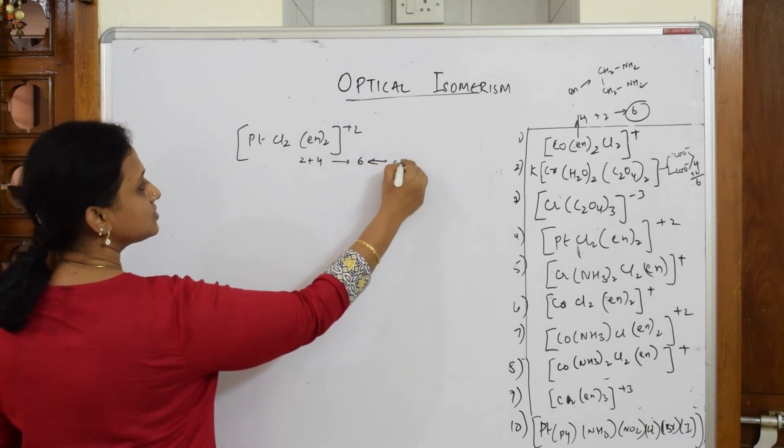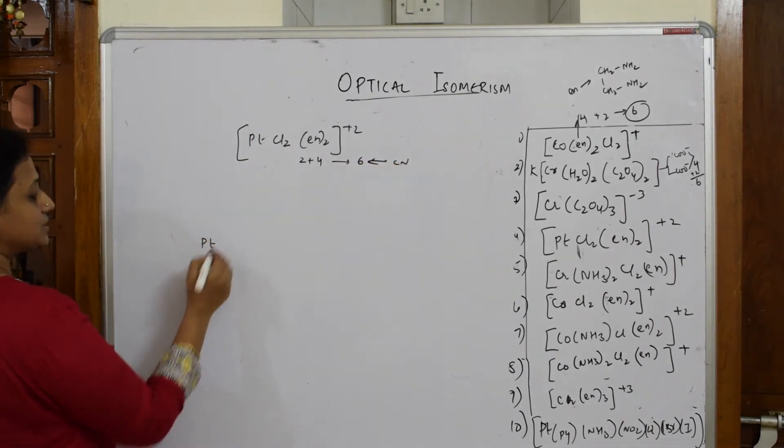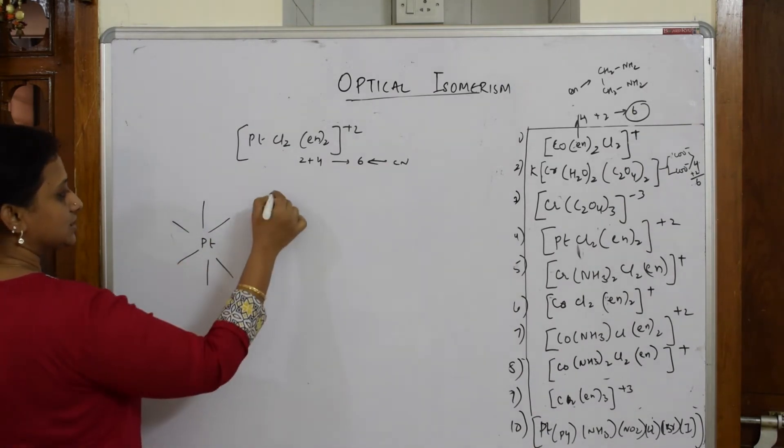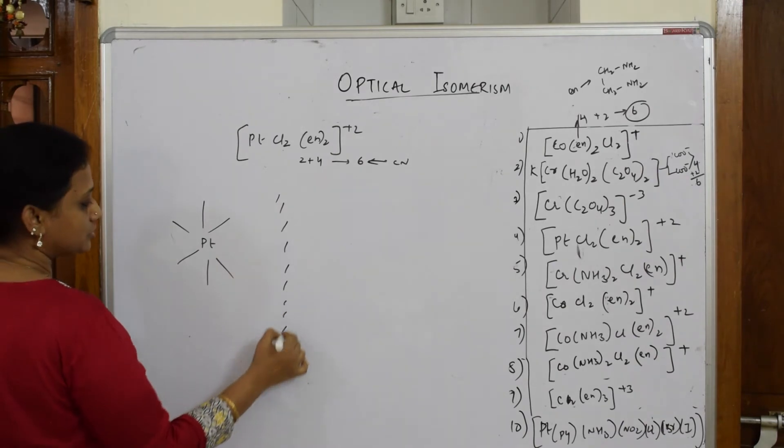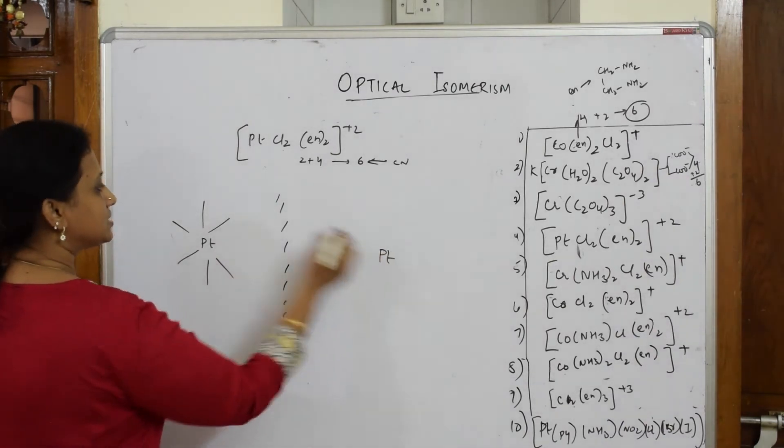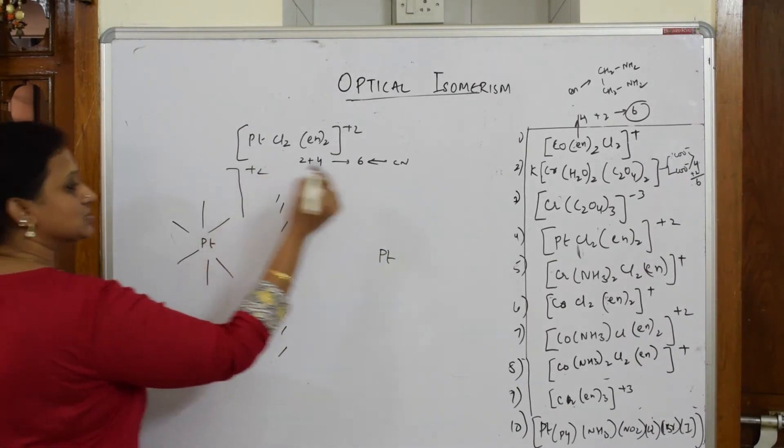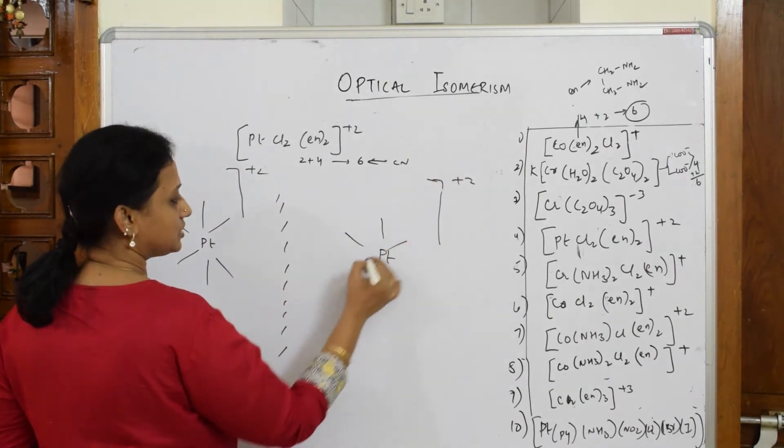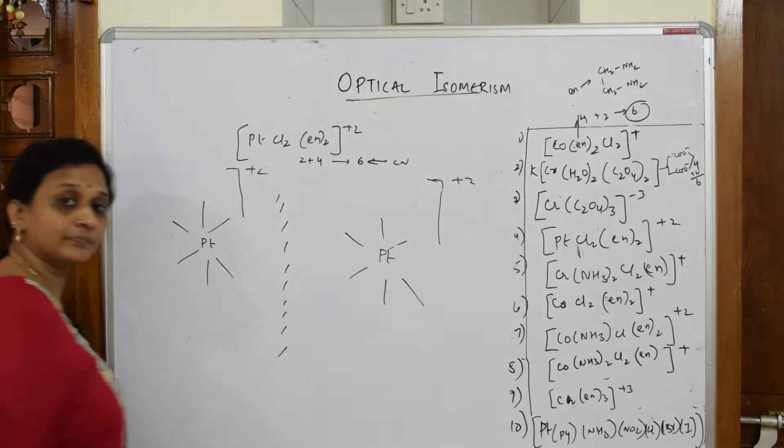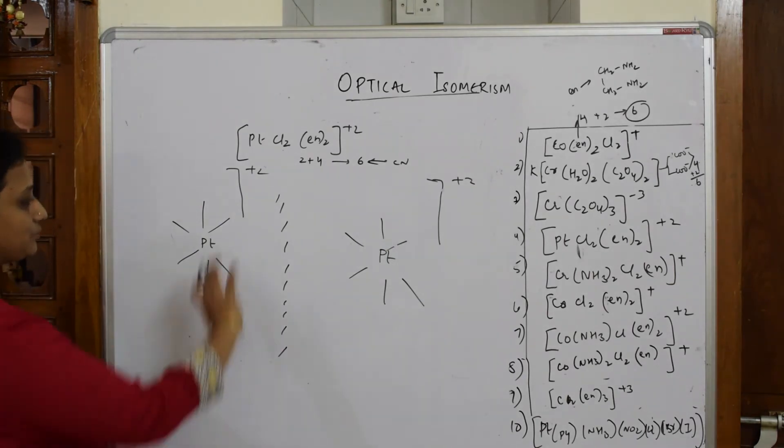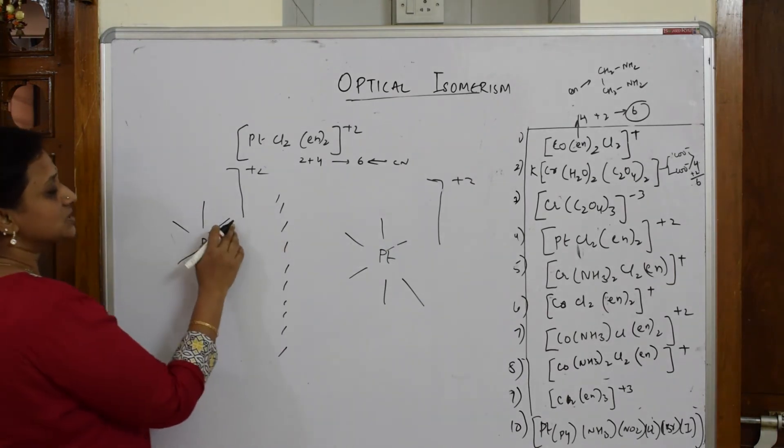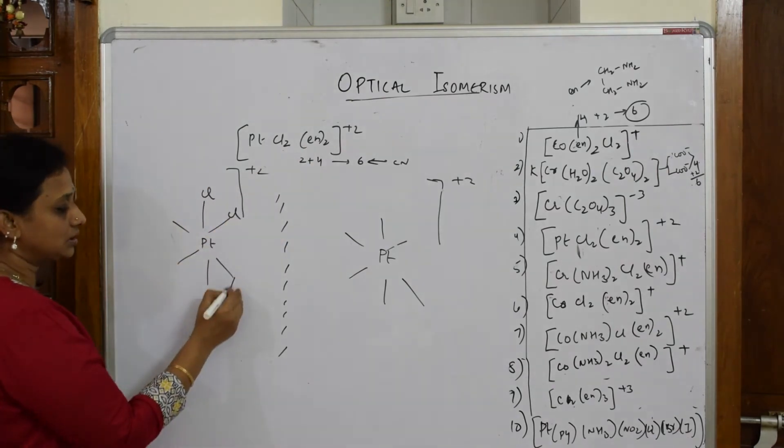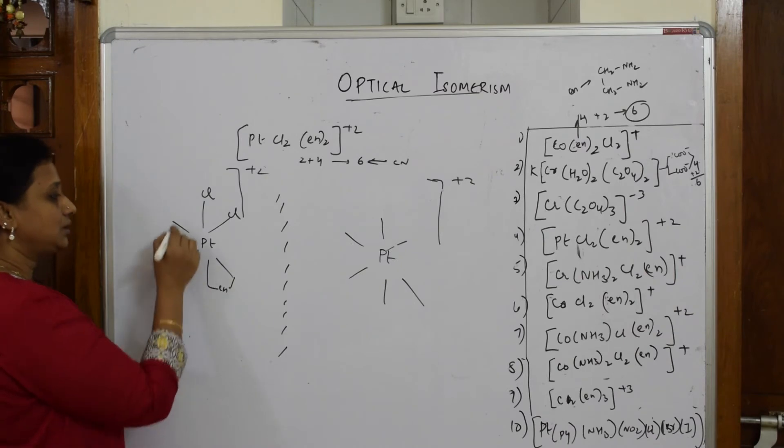Draw platinum in the center: one, two, three, four, five, six. And draw the mirror image of this: platinum in the center. The charge here is +2, here also the charge is +2. One, two, three, four, five, and six. Make it neatly in the exam, I'm not drawing it so neatly here. Start from Cl to Cl to one Cl, second Cl, en are two: en, en.